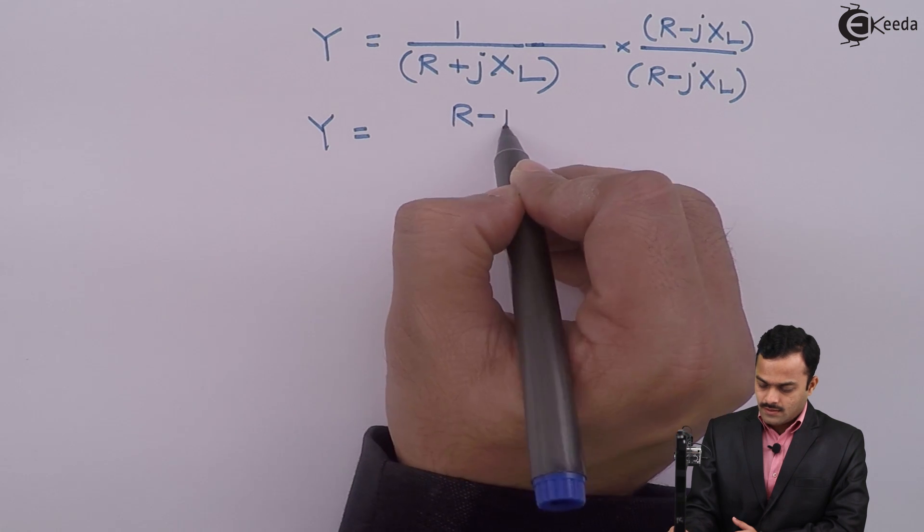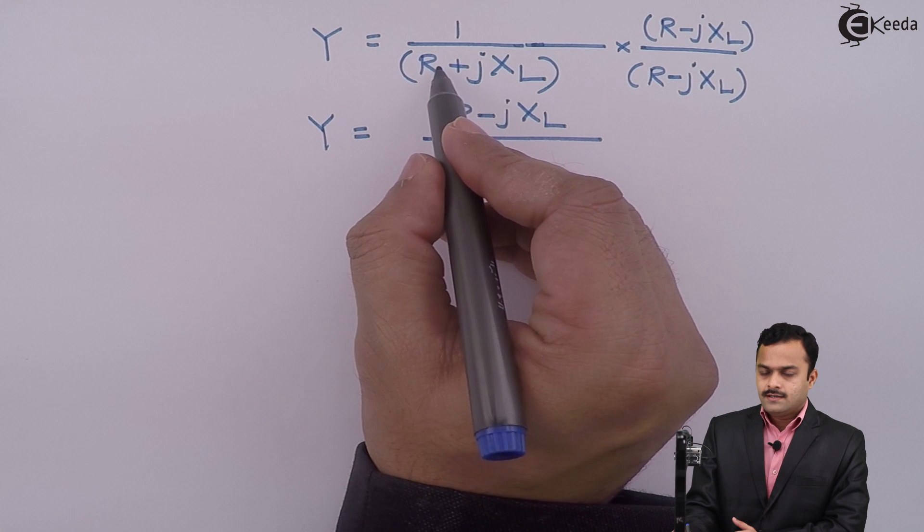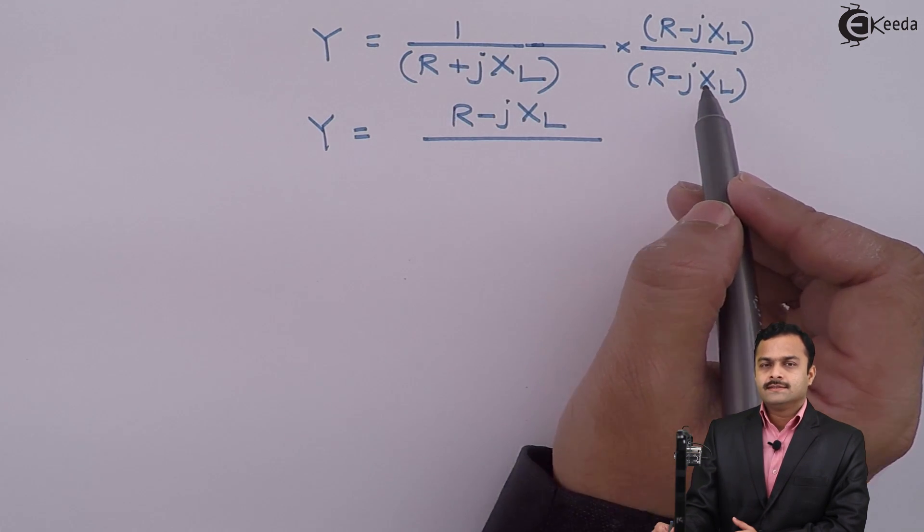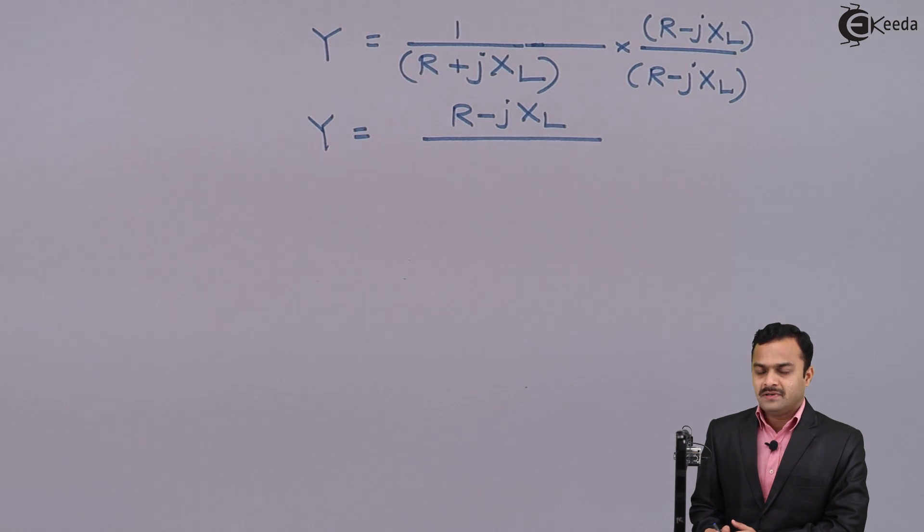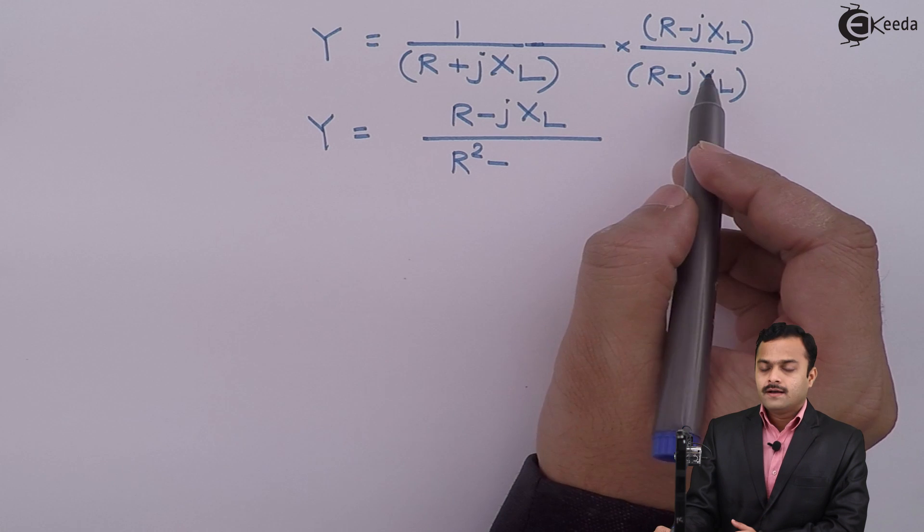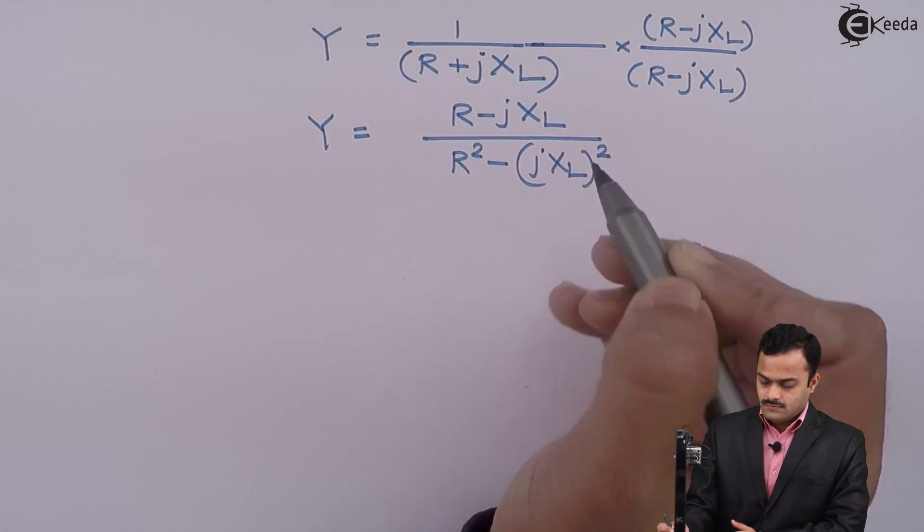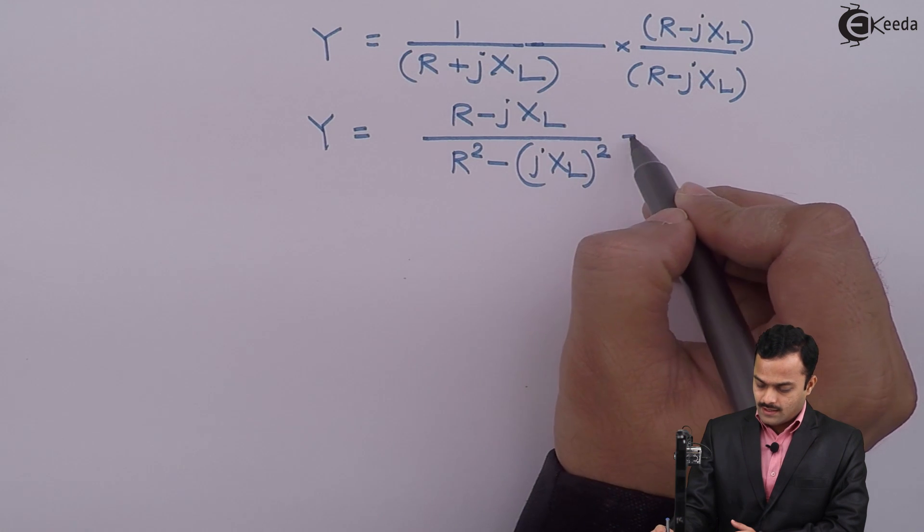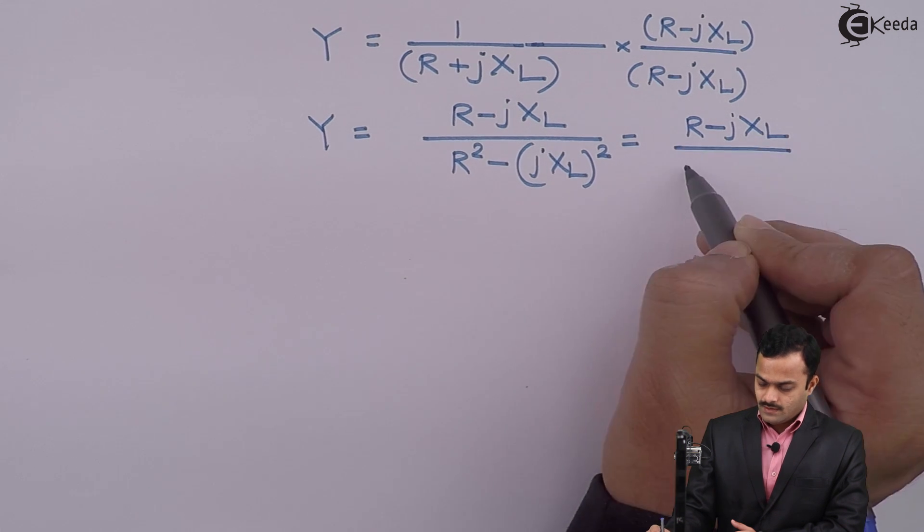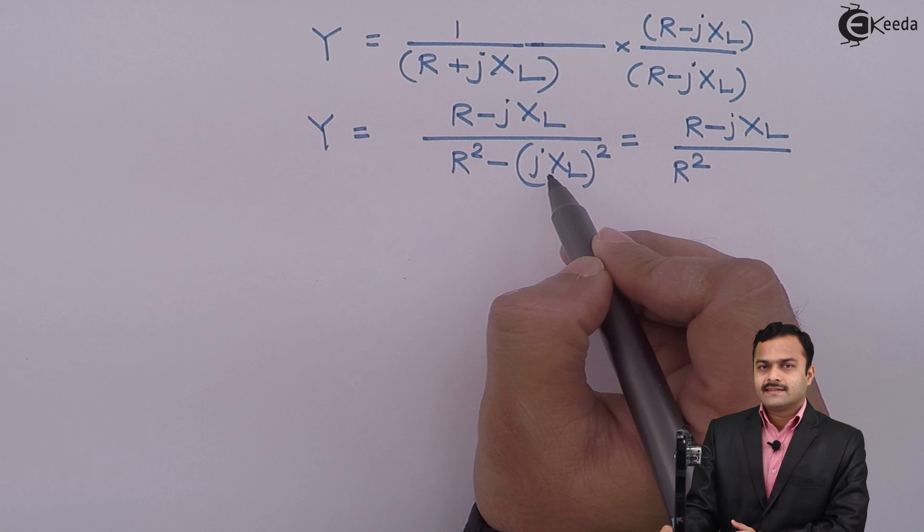So I will get (R - jXL) divided by... here I will use the formula (A + B)(A - B) = A² - B². So it's R² minus... B is jXL, so if I simplify, I will get R² minus (jXL)².